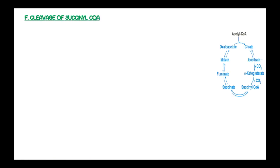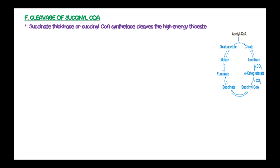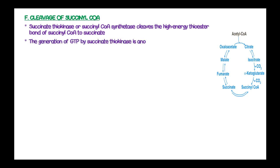Cleavage of succinyl-coenzyme A: succinate thiokinase, or succinyl-coenzyme A synthase, cleaves the high-energy thioester bond of succinyl-coenzyme A to form succinate. The generation of GTP by succinate thiokinase is another example of substrate-level phosphorylation.